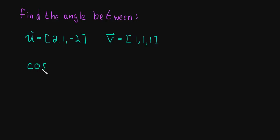The formula says that the cosine of the angle between two vectors is equal to u dot v divided by the length of u times the length of v.